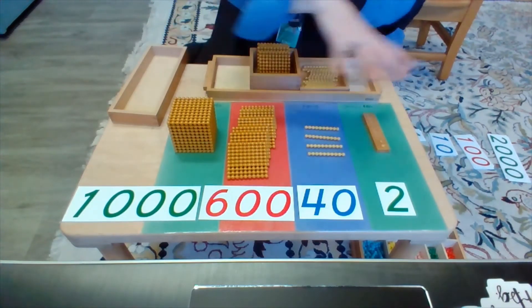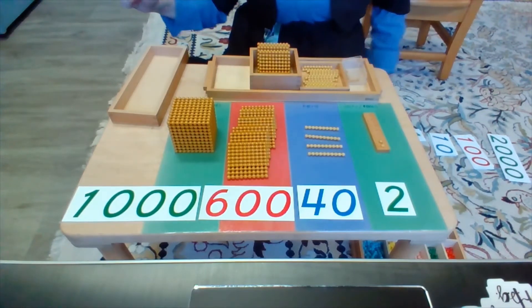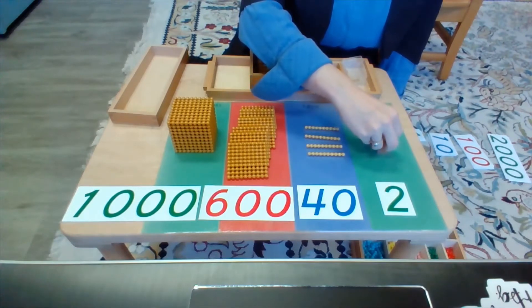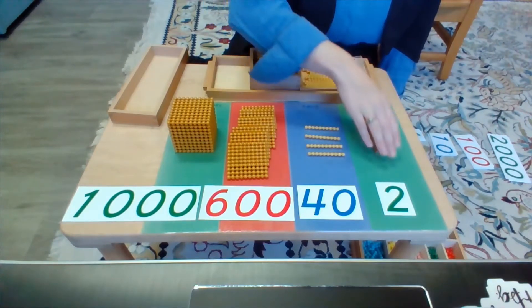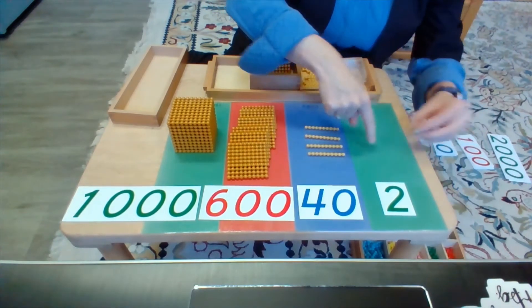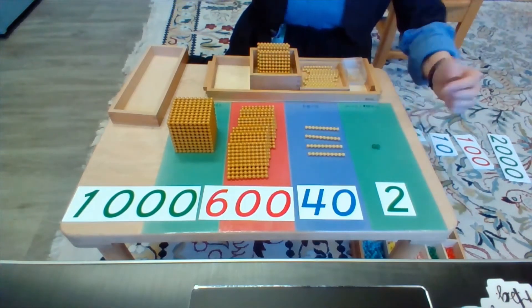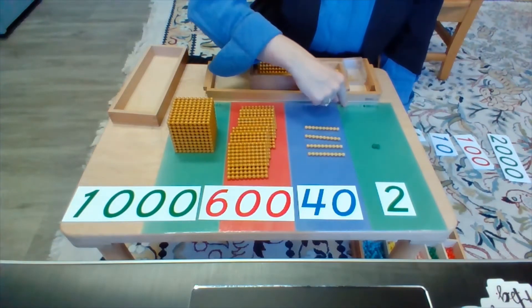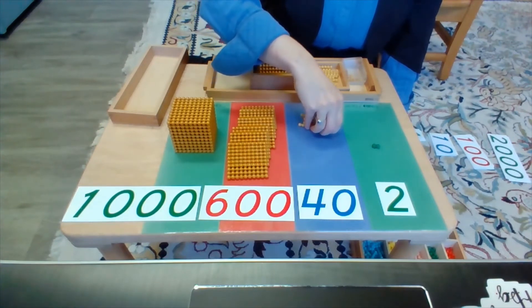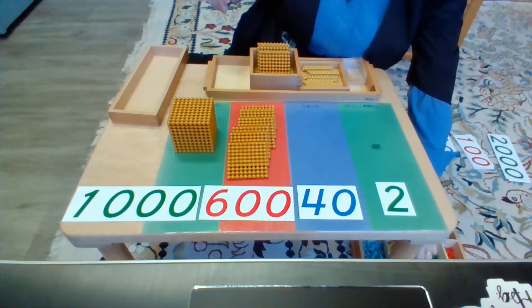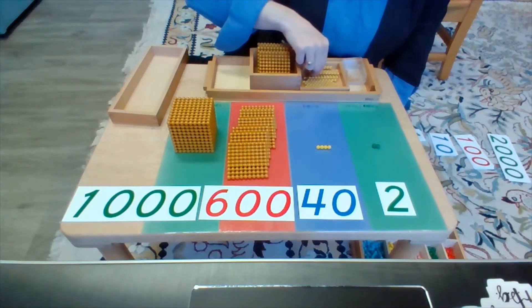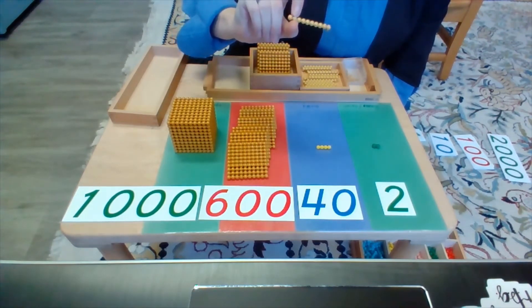That is one way to represent this number using the golden beads, but I can also represent this number using simply a number, a digit in that place value. So here I have 2 where it shows me that I am 2 in the units place. To represent 40, I simply need to put 4 in the tens place, and I know that that represents 4 of these golden bead tens.